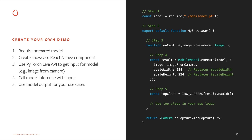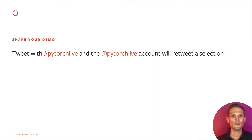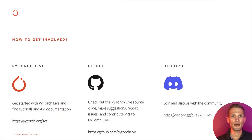We'd love to see what you all create. If you publish your apps, tweet with the hashtag PyTorch Life and we'll retweet some of them from the PyTorch Life account. Visit the PyTorch Life website for tutorials and API documentation. Check out the PyTorch Life GitHub repository for the source code to make suggestions, report issues, and contribute pull requests. And join the Discord channel to connect with the community and start discussions.